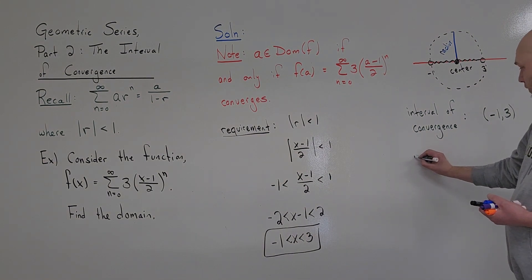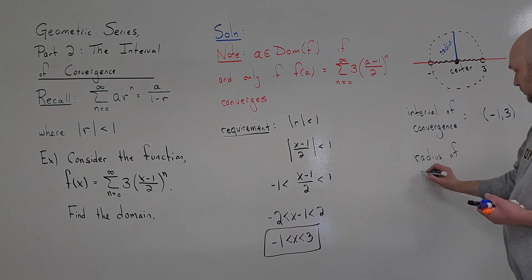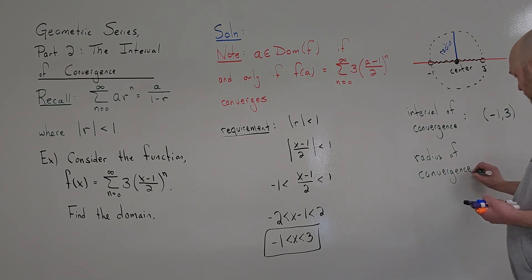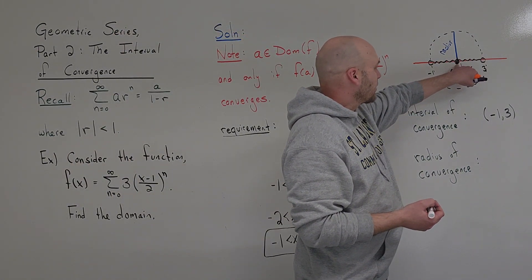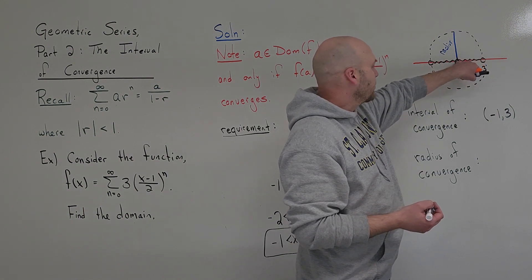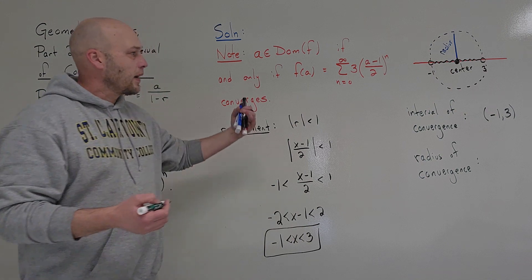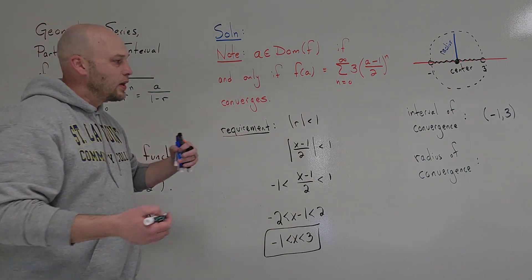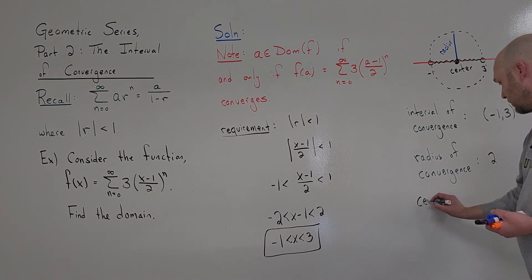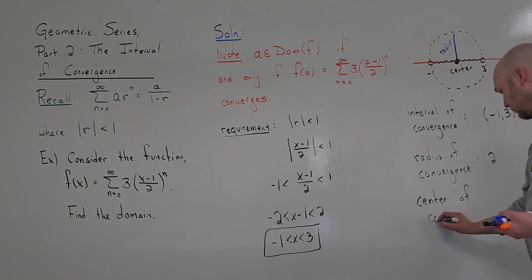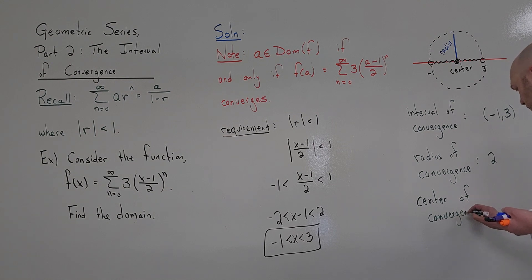The radius of convergence is half the length of the interval — from the center to an endpoint. The length from minus 1 to 3 is 4, therefore the radius is 2. The center of convergence is the x-value in the middle of that interval, which would be 1.